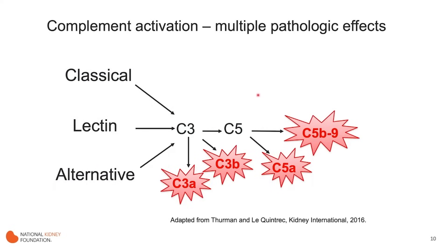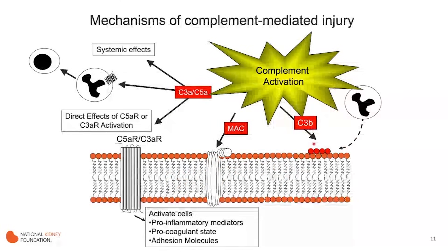Once complement is activated, you simultaneously generate a number of different fragments that have potent biologic effects. C3a and C5a ligate receptors on neutrophils and other immune cells; the kidney can also express receptors for these fragments, so they can have direct effects on cells within the kidney, including podocytes. C3b is also a ligand for receptors on leukocytes with many immunologic effects. And finally, the downstream terminal complement fragments — the membrane attack complex — forms pores in target cells, which can activate them or lead to direct lysis.